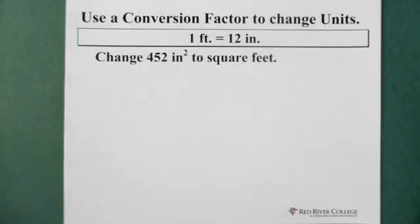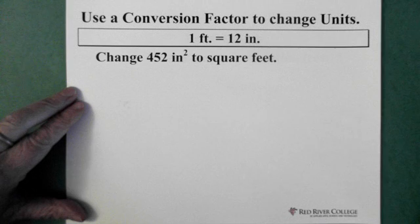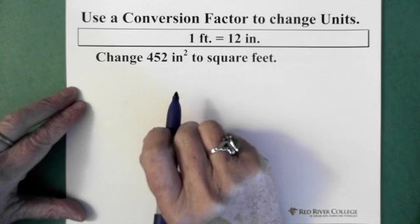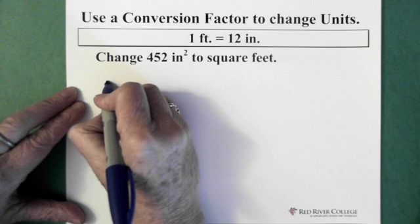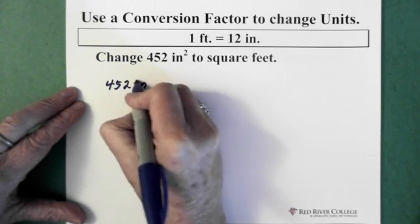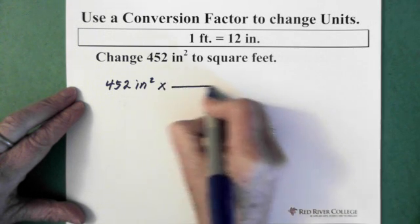Okay, so the next question. Let's say we want to change 452 inches squared to square feet. So, again, what we do, and we know that the relationship between feet and inches is that there's 12 inches and 1 foot. So, we start again with what we know. 452 inches squared. Put our multiplication sign, put our line.